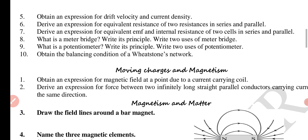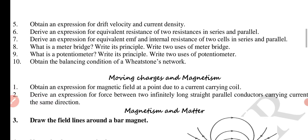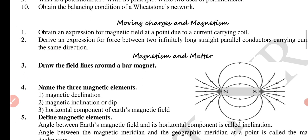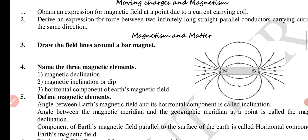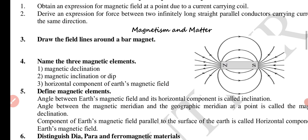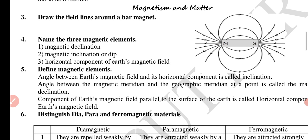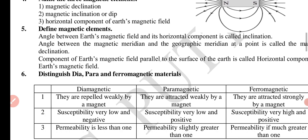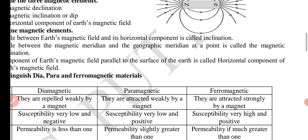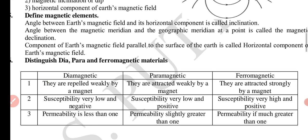Moving charges and magnetism. Obtain an expression for magnetic field at a point due to a current carrying coil. Derive an expression for force between two infinitely long straight parallel conductors carrying current in the same direction. Magnetism and matter chapter: draw the field lines around a bar magnet. Name the three magnetic elements: magnetic declination, inclination or dip, horizontal component. Define magnetic elements. Distinguish between dia, para and ferromagnetic. Diamagnetic, paramagnetic, ferromagnetic properties.